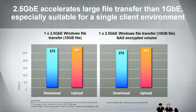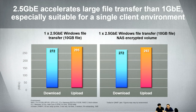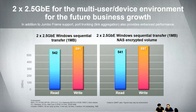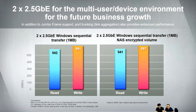In Windows file transfer performance tests with a 10GB file, the 2.5G connection reaches about 372 MB/s — more than two times faster than a gigabit NAS. If you bond the two 2.5G LAN ports together, using iometer with a 1MB file size on a RAID 5 12-bay configuration, you can achieve about 540 MB/s. This is already quite good for many business applications looking for an affordable NAS with higher performance.